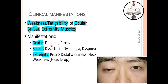Ocular symptoms include diplopia (double vision) and ptosis (drooping of the eyelids). Bulbar weakness involves facial and neck muscle weakness, presenting as dysarthria (difficulty speaking), dysphagia (difficulty swallowing), and dyspnea (difficulty breathing). Extremity weakness in MG tends to be proximal rather than distal — distal weakness is more characteristic of GBS. Neck weakness and head drop are also seen.